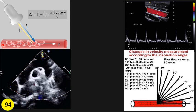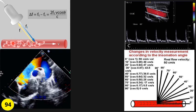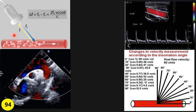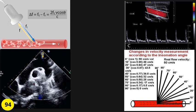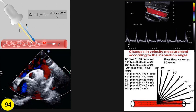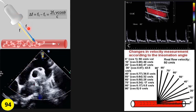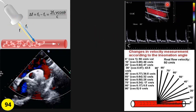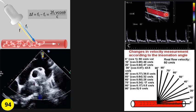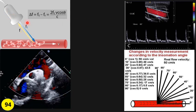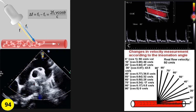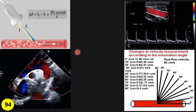As you know, the Doppler principle states that if sound hits a moving reflector object, the reflected sound frequency — the sound that goes back to the transducer — will change. If the moving object goes toward the transducer, the frequency change will be positive, shown as red in color Doppler. If it goes away from the transducer, it gives a negative shift, shown as blue in color Doppler.